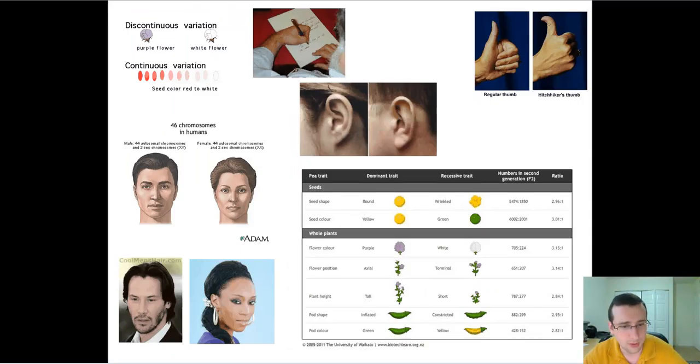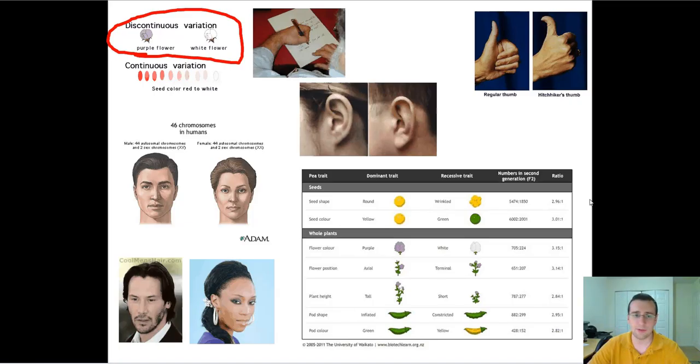Now all this is going to be very important. There's also different kinds of variation in terms of whether they have several types or just two types. The majority of things in life are going to be continuous variation, but there are some things which are going to be discontinuous, like either white or a purple flower. Think, for example, like having a regular thumb or a hitchhiker's thumb, having an attached earlobe or having an unattached earlobe, having or not having widow's peak.